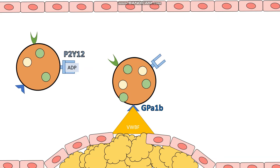How else may our original platelet recruit other platelets to the area? Well, one of the things that happens when our platelet is activated is that the phospholipid bilayer of our platelet is actually broken down, and the resultant product from this is thromboxane A2. Thromboxane A2 actually helps with platelet aggregation, so this is further going to help the platelets club together in order to form a platelet plug that's going to be able to patch up our hole.